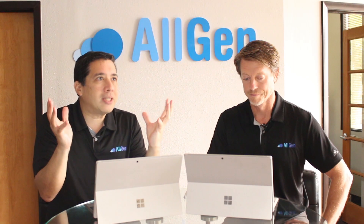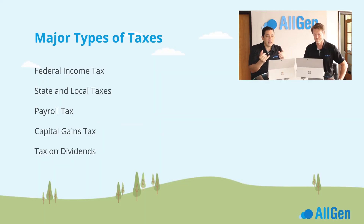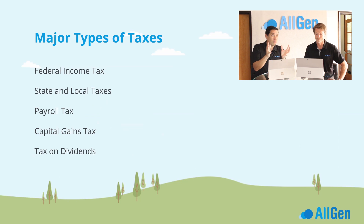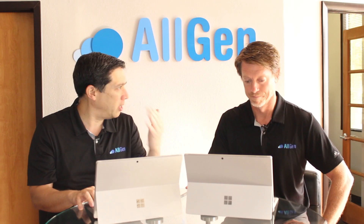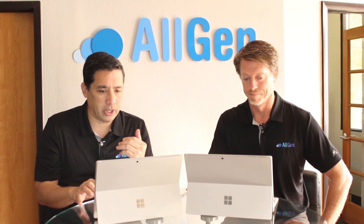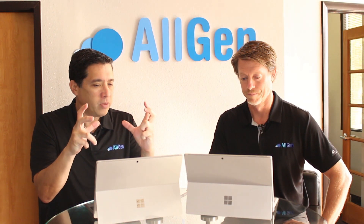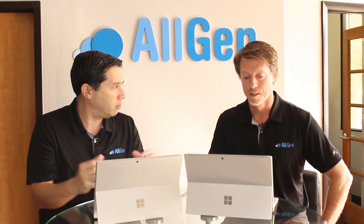What are the major types of taxes? There's federal income tax, state and local tax — which some people refer to as SALT — payroll tax, capital gains tax, and tax on dividends. Let's get into that a little bit. Jason, talk to us about federal income tax and how it's broken down.